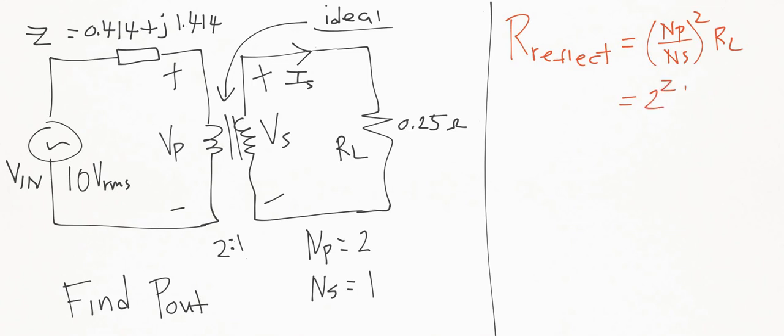So this actually ends up equaling 2 squared times RL, which is 4 times 0.25, which equals 1 ohm. So that is the reflected resistance onto the primary side, equal to 1 ohm.